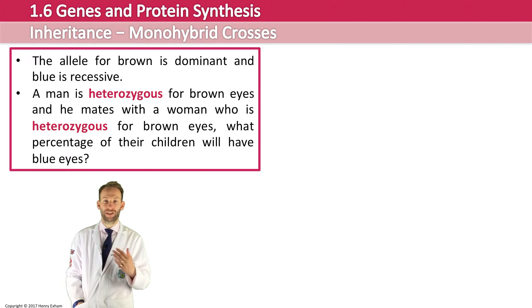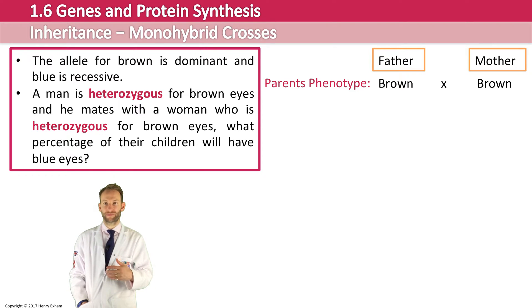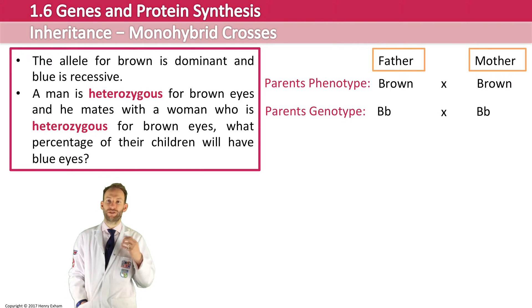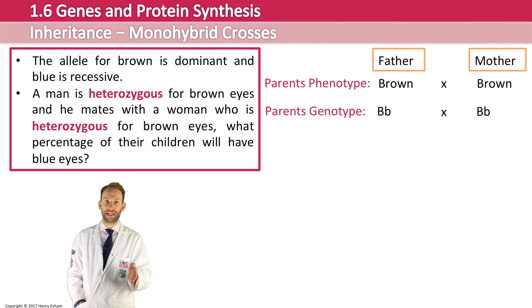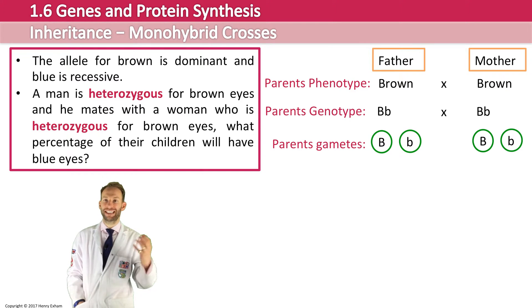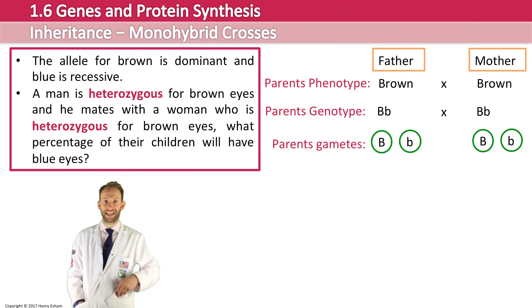You must always lay out your genetic answers in the same way, showing all levels of detail. Start with the parents' phenotype — in this case both brown, since phenotype is what is expressed. The genotype: both are heterozygous, so big B little b crossed with big B little b. Gametes should be shown in circles — the father can pass on either big B or little b in his sperm, and the mother the same in her eggs. Remember, in meiosis a diploid cell becomes haploid, so gametes carry only one allele.